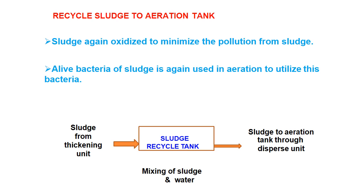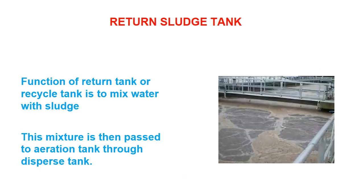For sludge recycling: the sludge obtained from treatment is again oxidized to minimize pollution from sludge. Live bacteria in the sludge are reused in aeration for further treatment. There is a sludge recycle tank where sludge from the thickening unit mixes with newly incoming wastewater and passes to the aeration tank through the dispersive unit. The function of the return or recycle tank is to mix water with sludge, and this mixture is then passed to the aeration tank through the disperse tank.